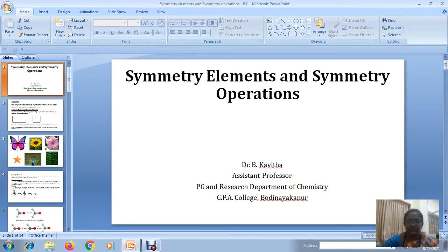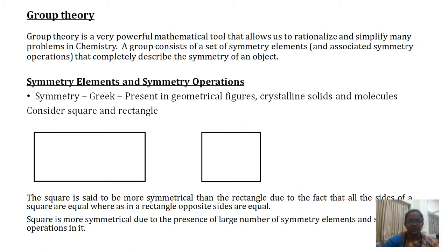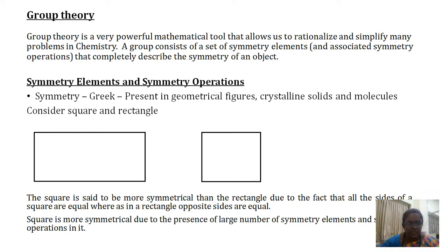A warm greeting to all of you. We are going to see about symmetry elements and symmetry operations present in group theory. Group theory is a very powerful mathematical tool that allows us to rationalize and simplify many problems in chemistry. A group consists of a set of symmetry elements associated with symmetry operations that completely describes the symmetry of a particular object.